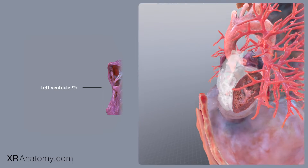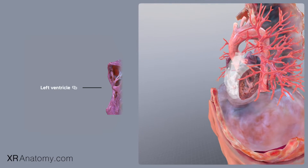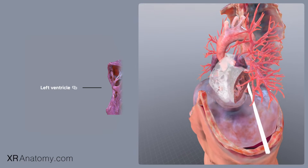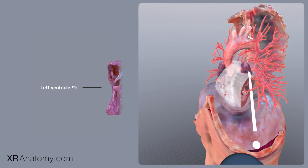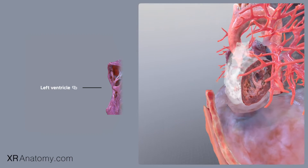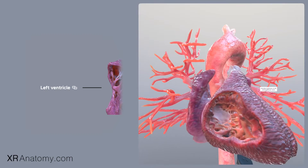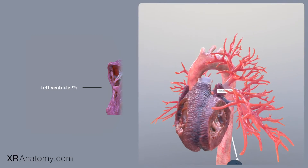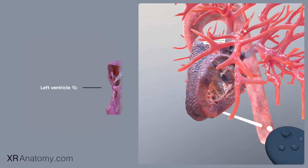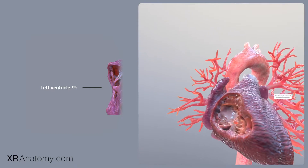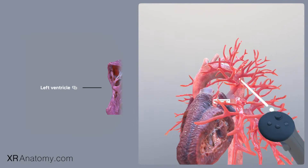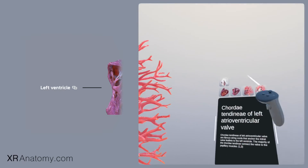Before we dive into the anatomy of the left ventricle, we must note that the structure and functionality of the left ventricle play a crucial role in the cardiovascular system. Compared to the right ventricle, the left ventricle is elongated and possesses a thicker myocardium layer, reflecting its critical role in pumping oxygenated blood throughout most of the body.